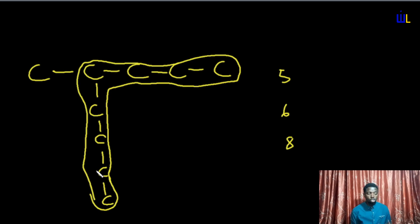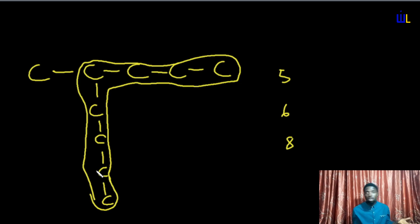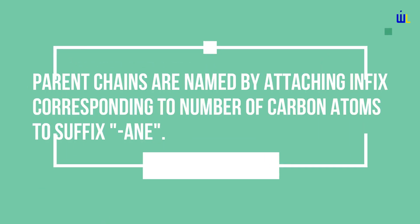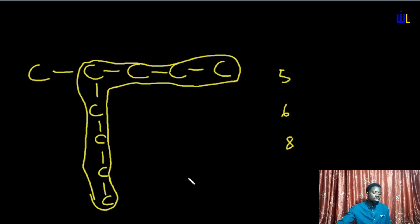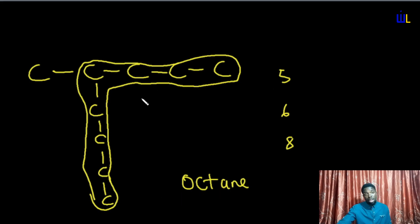I advise circling the parent chain so you can clearly separate it from the substituents. Having identified the parent chain, you name it as an unbranched alkane. Count the number of carbon atoms — one through eight — and the number eight is represented by the infix 'oct,' then attach '-ane' to give octane. Note this is just the name of the parent chain; we'll get to naming the substituent next.